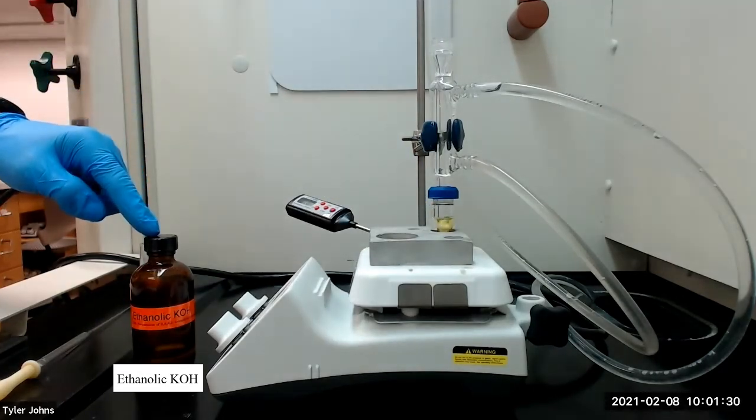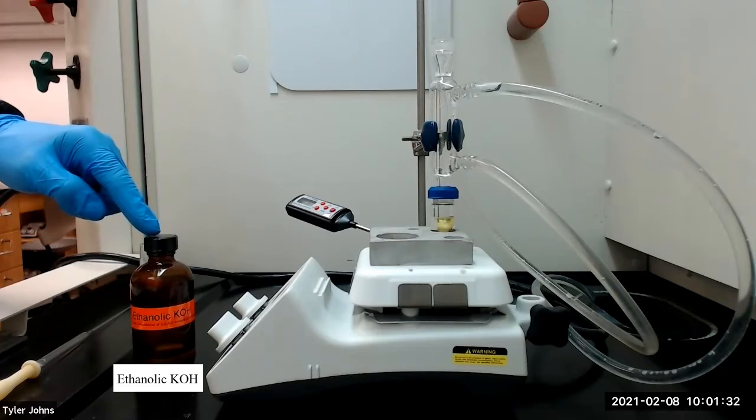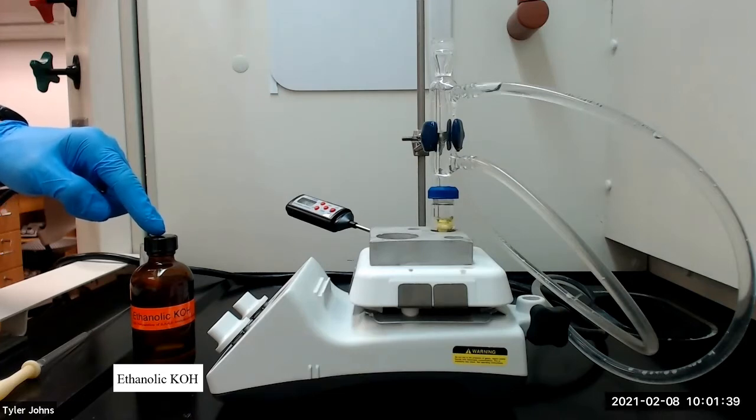The ethanolic potassium hydroxide solution is made from dissolving 0.4 grams of potassium hydroxide in 4 milliliters of absolute ethanol.